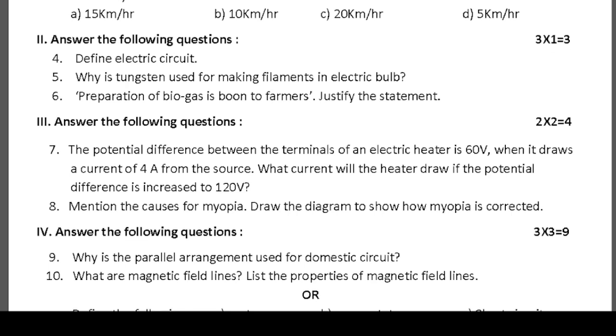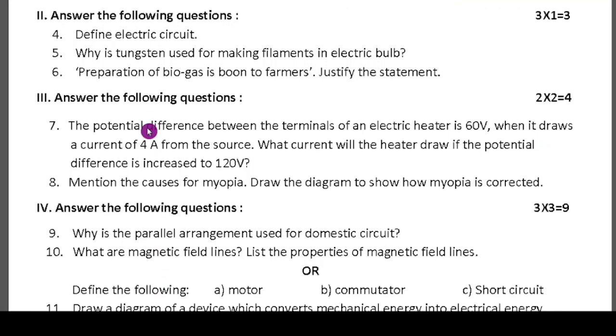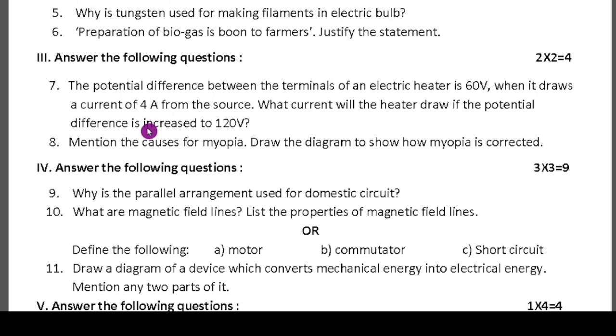Second question section: answer the following questions. Three questions will be there. Define electric circuit. Why is tungsten used for making filaments in electric bulb. Sixth one: preparation of biogas is boon to farmers, justify the statement. All the questions are very easy. Just in this video I am going to give the question paper, and if I have time 100%, I am going to give the solution in the next video.